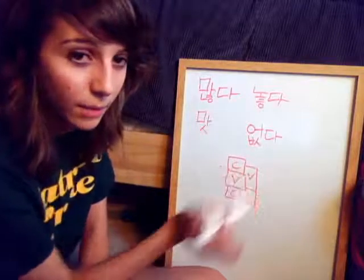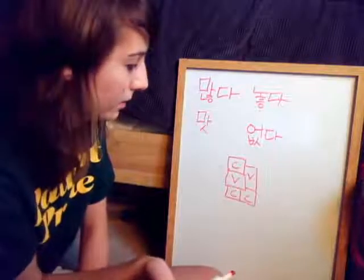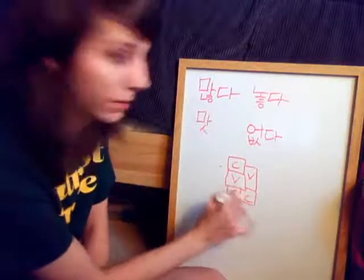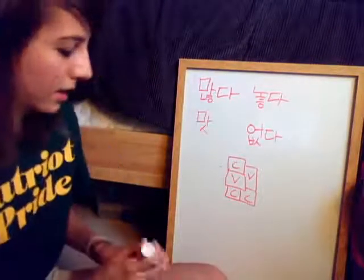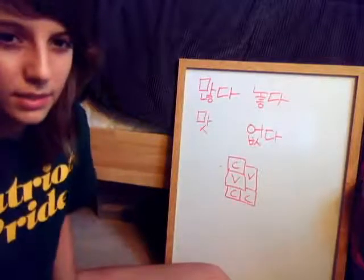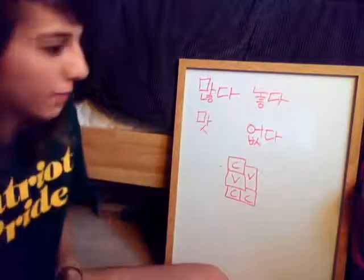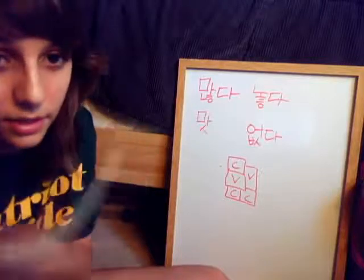And then if you need to add more letters, then you can put like consonants below the vowels. Okay? And if that makes sense, I'll show you. A good example is kwen chan ta. Okay.